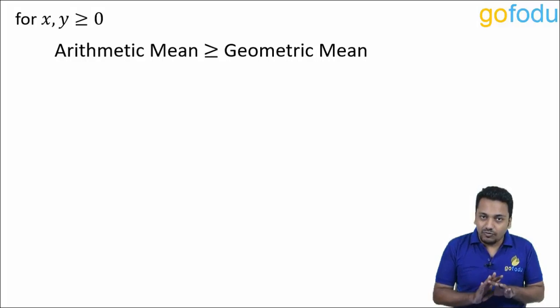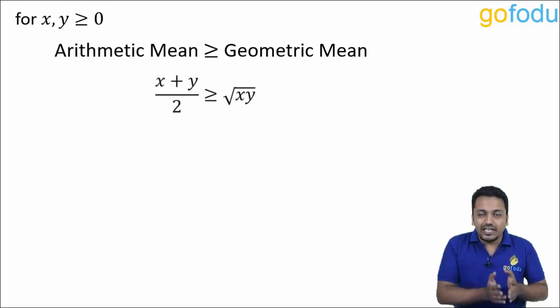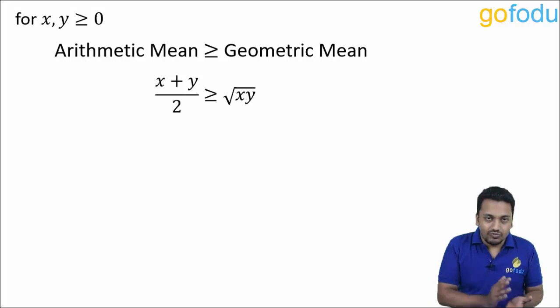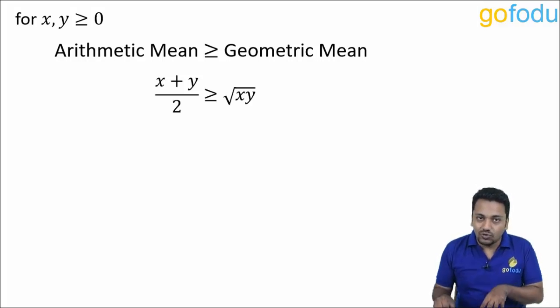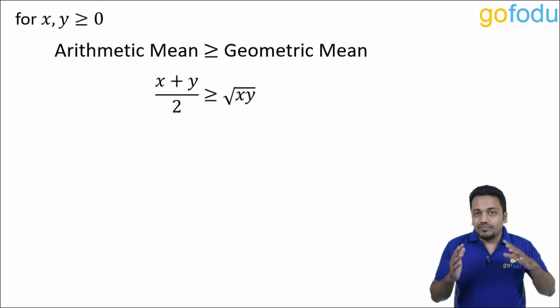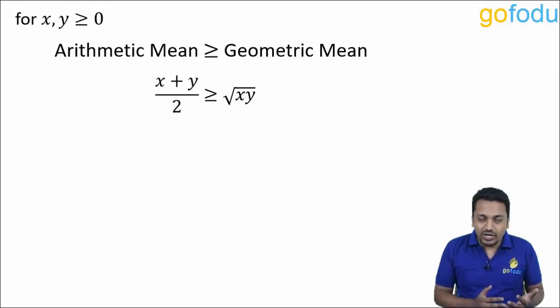Arithmetic mean is sum of all the observations divided by the number of observations. So here we have two numbers x and y, so it would be x plus y upon 2. And geometric mean is nth root of product of n numbers, so which in this case will be square root of x into y. So AM is always greater than or equal to GM.